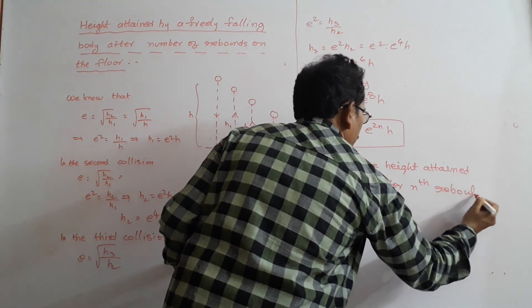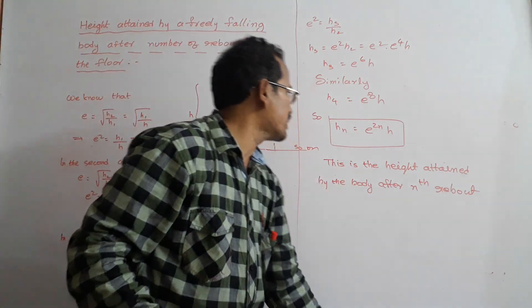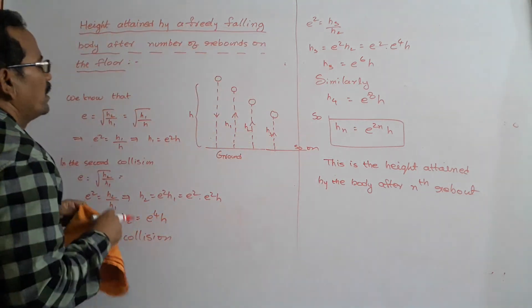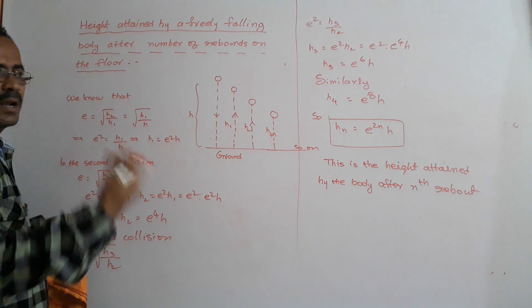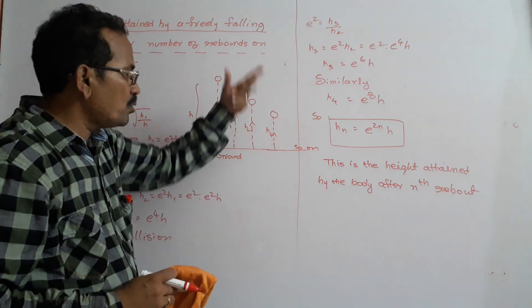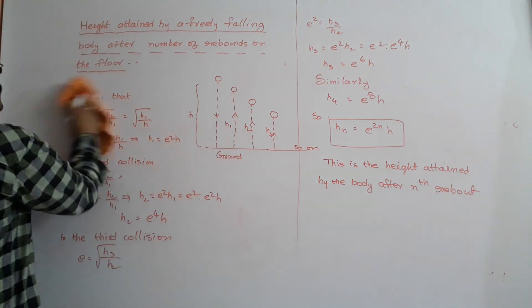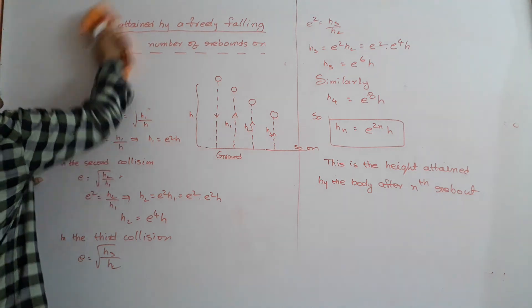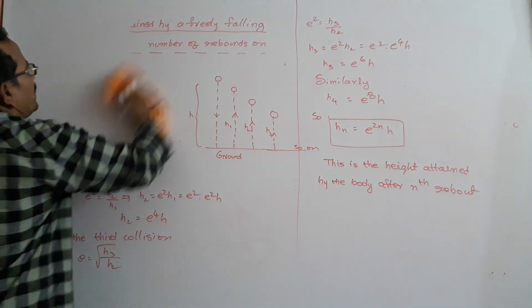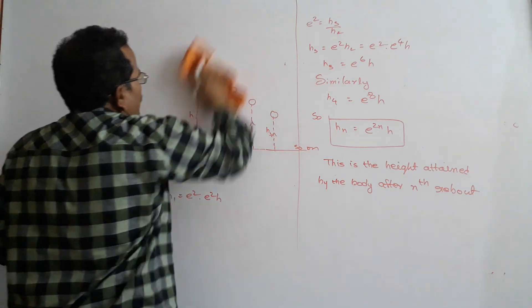HN equals E to the power 2N times H. This is the height attained by the body after the Nth rebound. Keep this formula in mind. Next, we determine the velocity after the Nth collision.